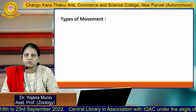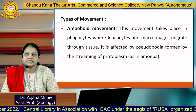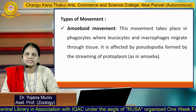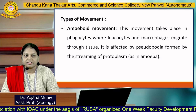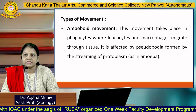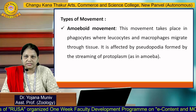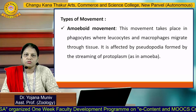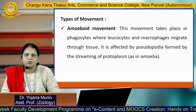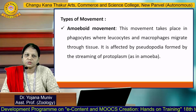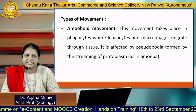There are four types of movement. The first one is amoeboid movement. This movement takes place in phagocytes where leukocytes and macrophages migrate through the tissue. It is effected by pseudopodia, formed by the streaming of protoplasm as in amoeba. The cytoplasm moves within the cell body, and wherever the cytoplasm moves, a pseudopodium forms, and in that direction the amoeba or cell will move.